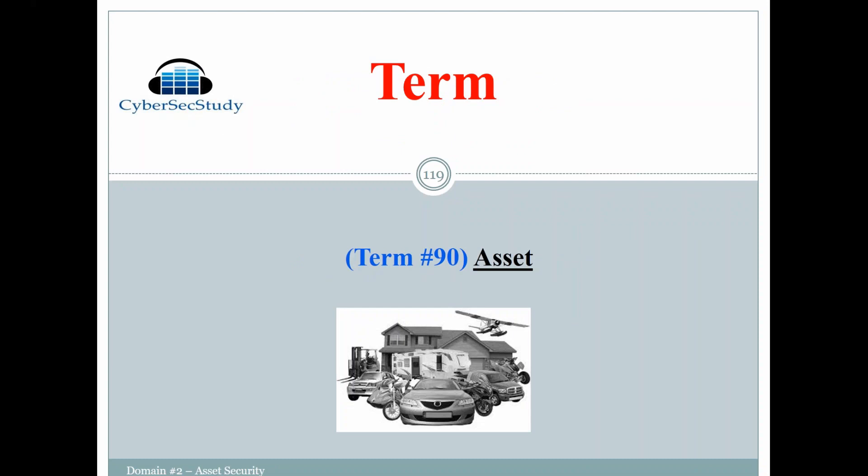Term number 90: an asset. Wikipedia defines an asset as an economic resource, or anything tangible or intangible that's capable of being owned or controlled to produce value, and is held to have a positive economic value. Assets include people as well — anything you own in that organization.